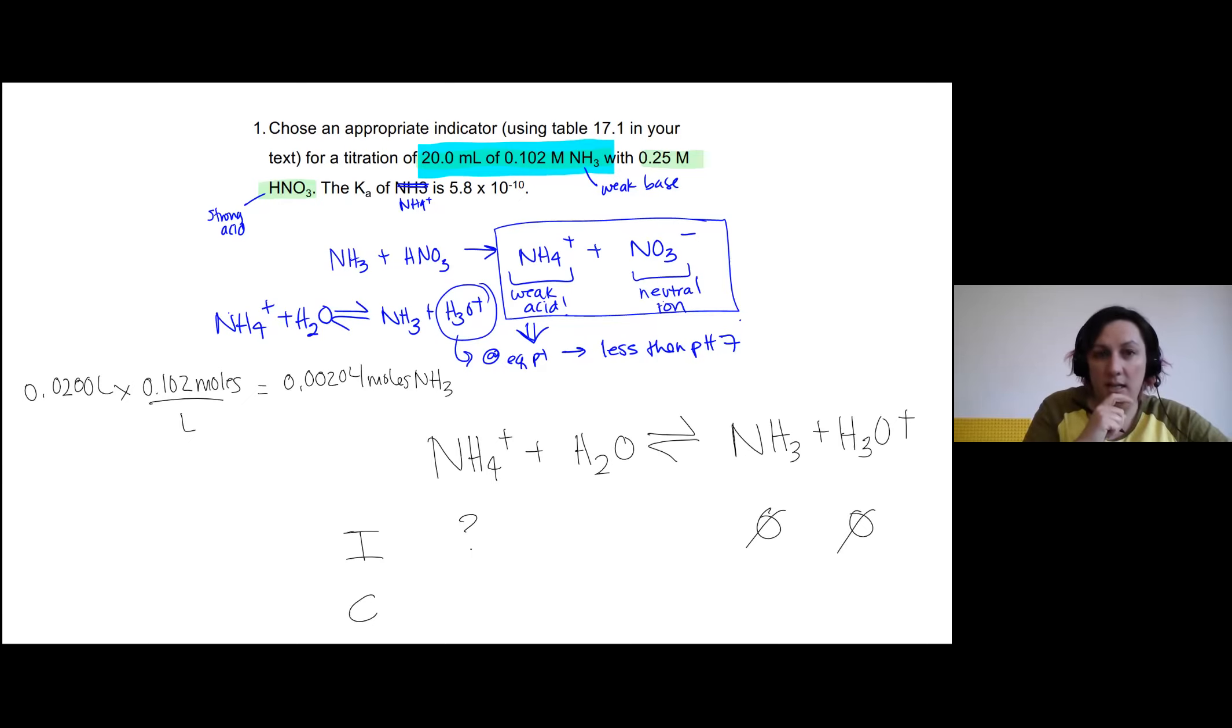But now we're going to do a one-to-one conversion because we know for every one mole of NH3 that is used in our titration, we're producing one mole of NH4+. So this is times one mole NH4+ divided by one mole NH3. Oh my goodness, it's the same number.